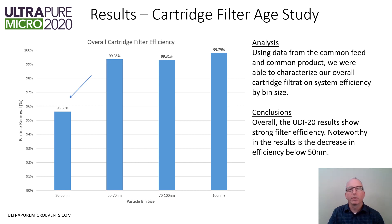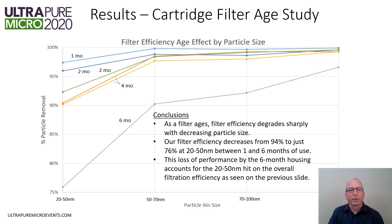Comparing the common feed and common product baselines by particle size enables us to characterize the overall filter efficiency in relation to the filter rating. Overall, these UDI-20 results show strong filter efficiency, but noteworthy is the measurable decrease in efficiency that occurs under 50 nanometers. This trend plots the filter efficiencies of each of the six filter housings as a function of particle size to highlight the effect of filter age. The one-month-old filter shows the strongest efficiencies across the full range of particle sizes, and efficiencies steadily drop as filters age from one to six months. At just six months, efficiencies at 20 to 50 nanometers plummet to just 76 percent, down from 94 percent at one month.